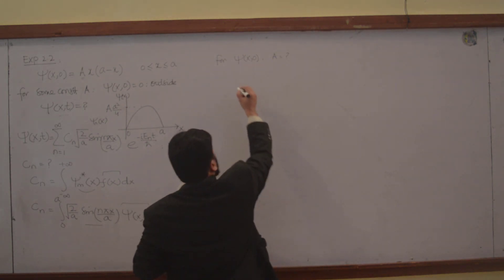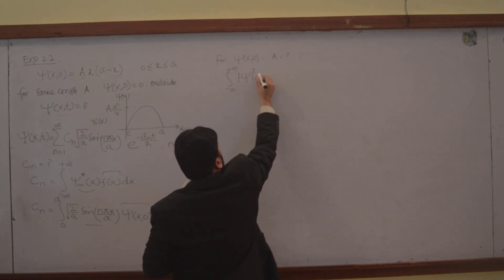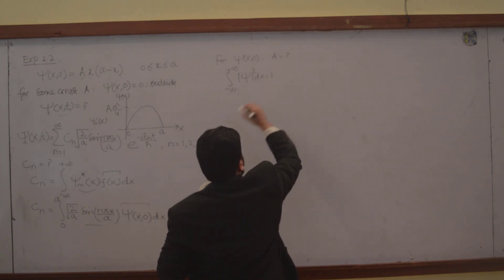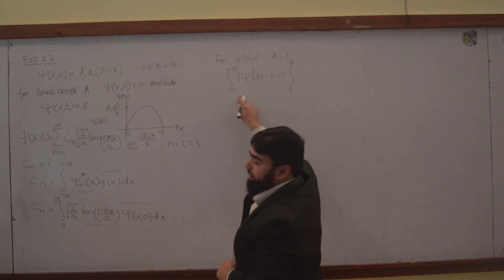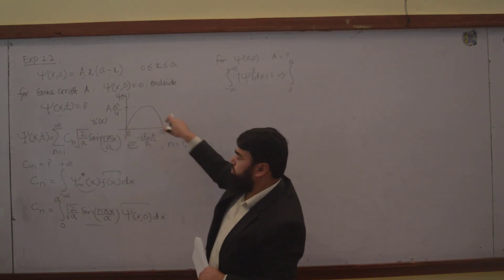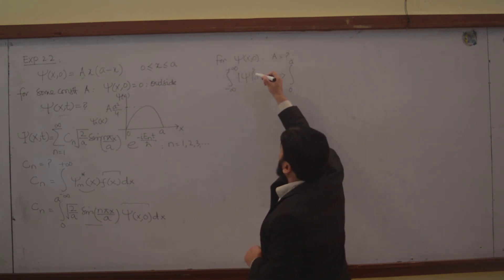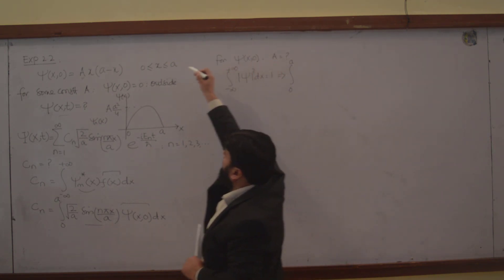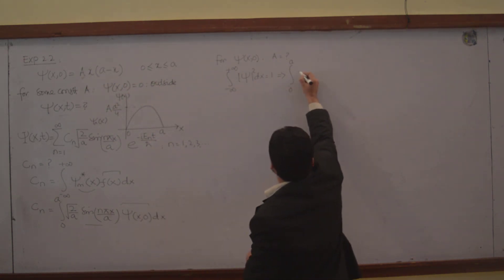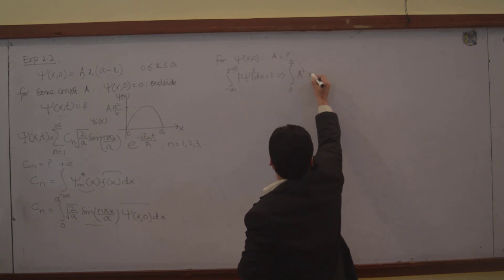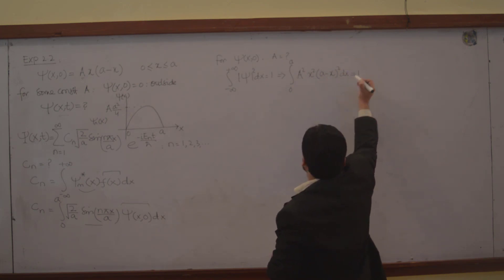To find the normalization constant, you know the normalization condition: from minus infinity to plus infinity, psi of x0 squared dx will be equal to 1. And this implies that in our case it is from 0 to A, because our wave function is defined from 0 to A only. If no iota is involved, we can directly square this thing. So it will be A squared times x squared times (A minus x) whole square dx equal to 1.